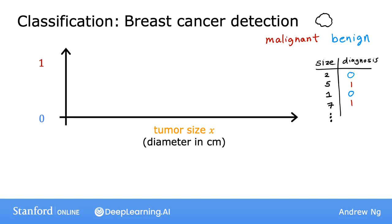You can then plot your data on a graph like this, where the horizontal axis represents the size of the tumor, and the vertical axis takes on only two values, 0 or 1, depending on whether the tumor is benign, 0, or malignant, 1.